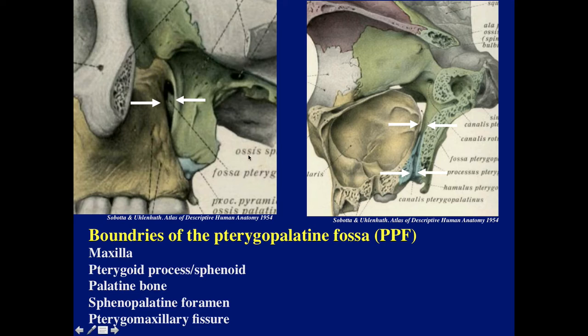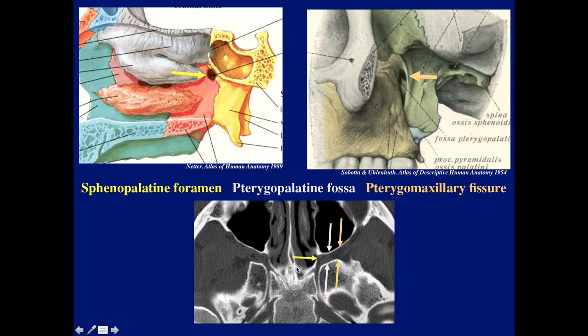Let's talk about the boundaries. Laterally we have the pterygomaxillary fissure; anteriorly we have the maxilla; posteriorly it is the pterygoid process of the sphenoid; and in blue here we can see the palatine bone forming the inferior aspect of the pterygopalatine fossa. Way deep we have the sphenopalatine foramen. On axial CT, this is the pterygomaxillary fissure — the outer boundary of the pterygopalatine fossa — and immediately we see the sphenopalatine foramen leading into the nasal cavity, with the pterygopalatine fossa between the white arrows.